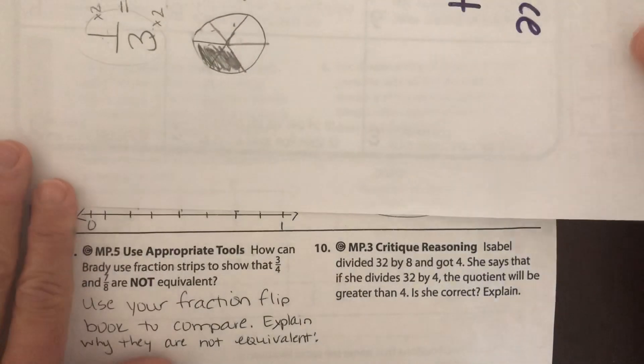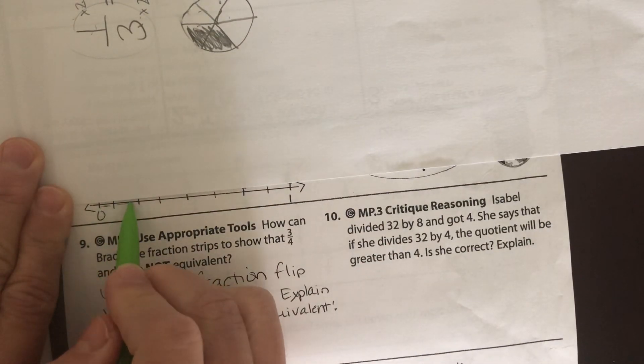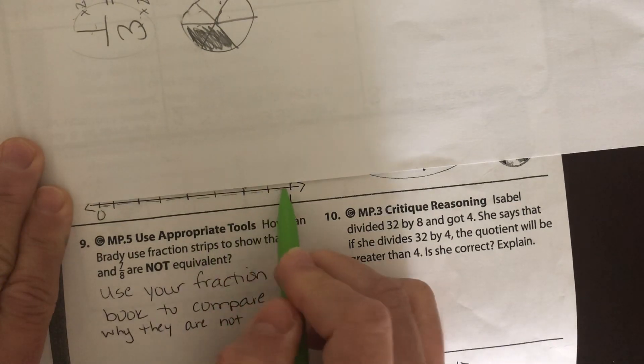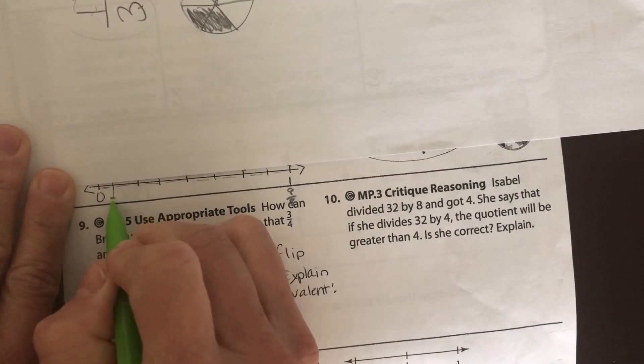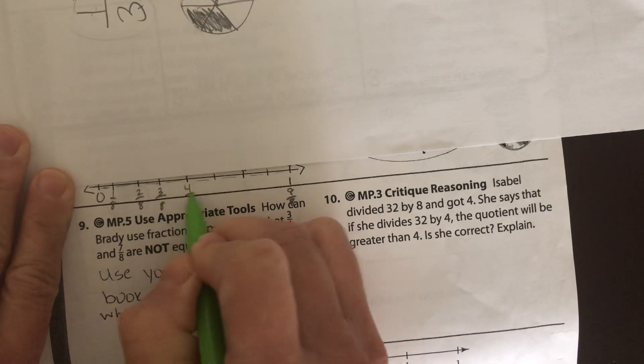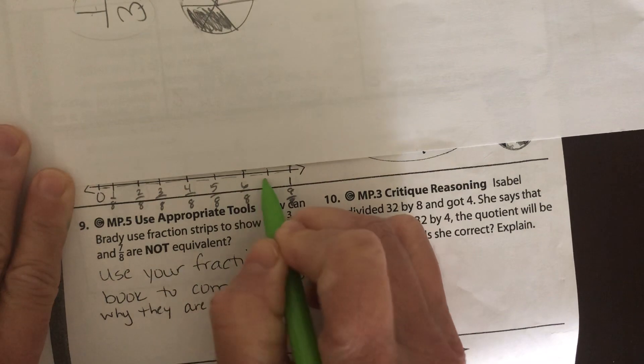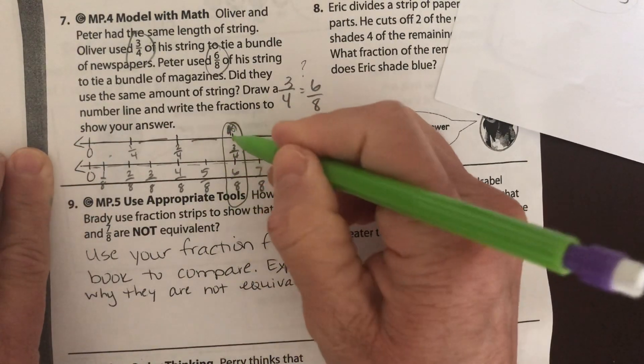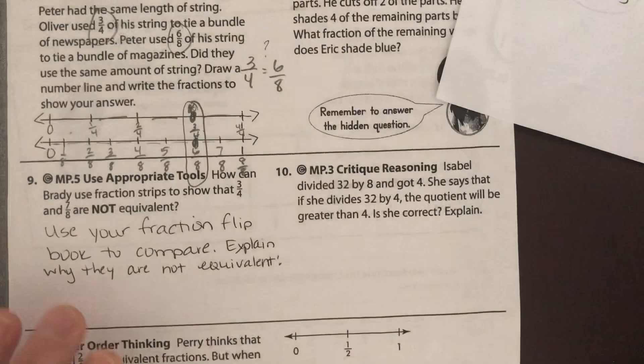Now let's look at the bottom one. Let's count our number of sections that we have. 1, 2, 3, 4, 5, 6, 7, 8. So this is 8-8ths. And then you're going to need to go 1-8th, 2-8ths, 3-8ths, 4-8ths, 5-8ths, 6-8ths, and 7-8ths. So is 3-4ths, this is 3-4ths, and this is 6-8ths, are they equivalent? Yes, they are.